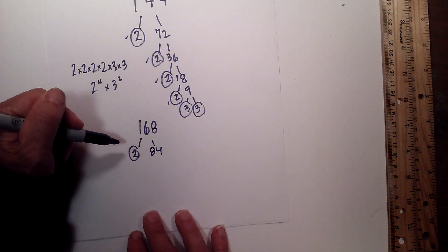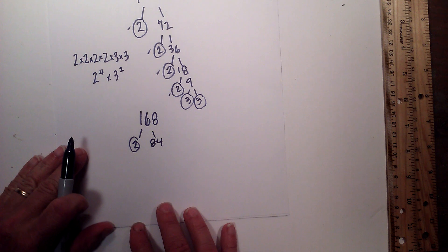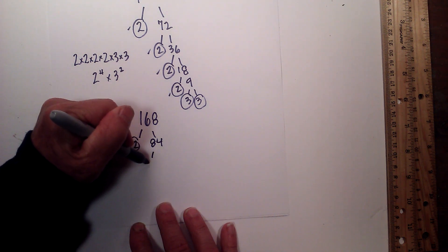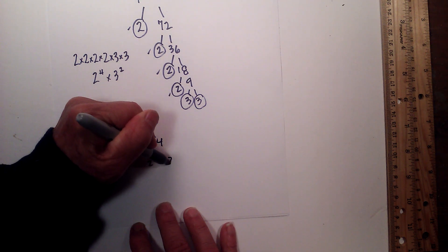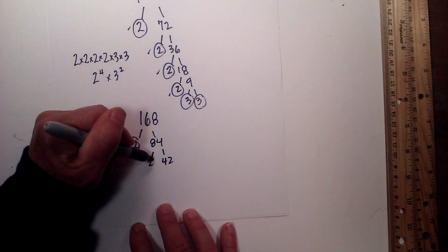Circle the 2 because it is prime. Now excuse me, I'm going to move it up a little bit more. 2 times 42 equals 84. Circle the 2.